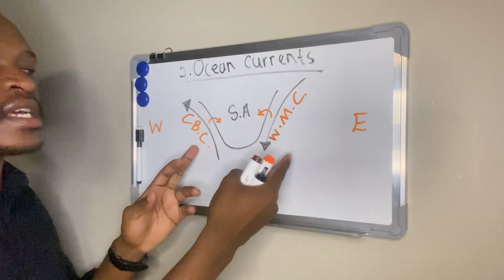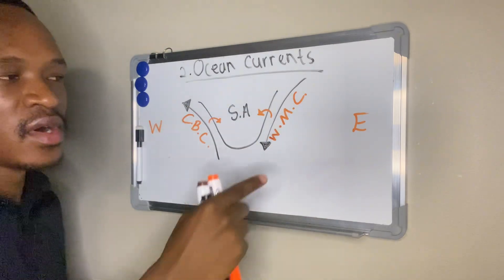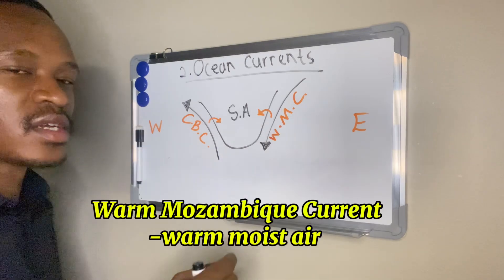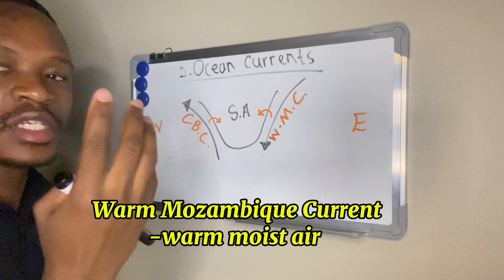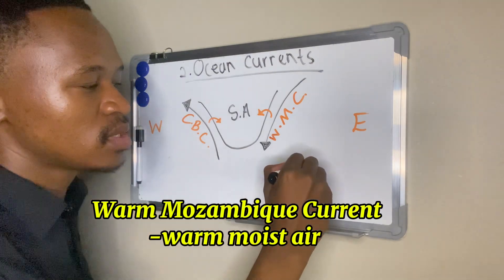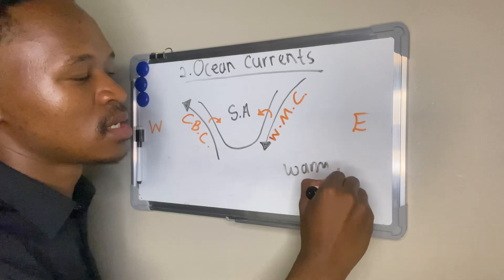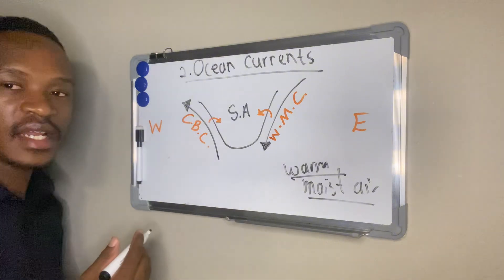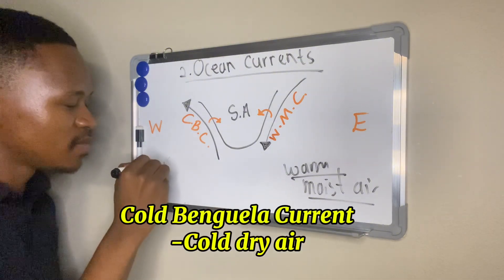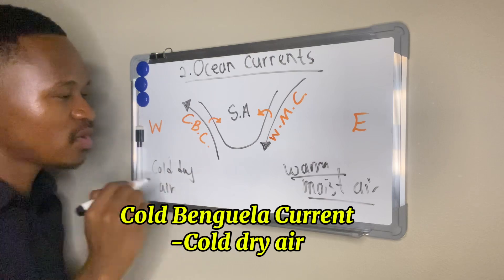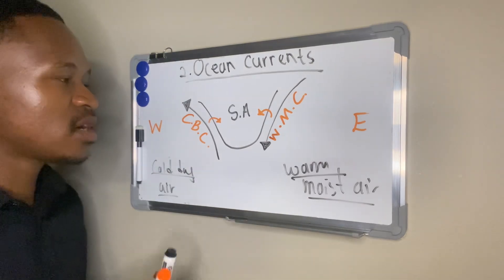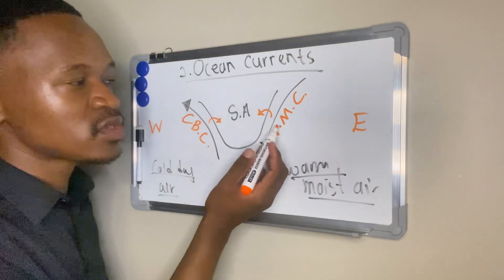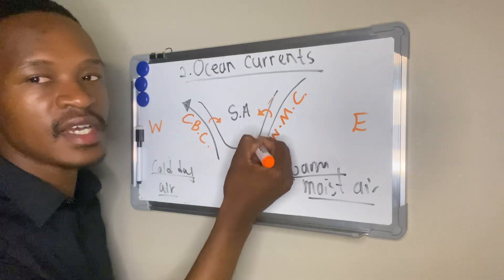These ocean currents affect coastal temperatures on the east and west coasts. The warm Mozambique current will bring warm, moist air to the east coast of South Africa. The cold Benguela current brings cold, dry air to the west coast of South Africa.